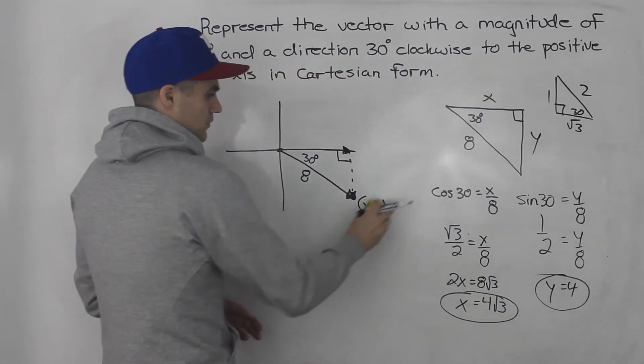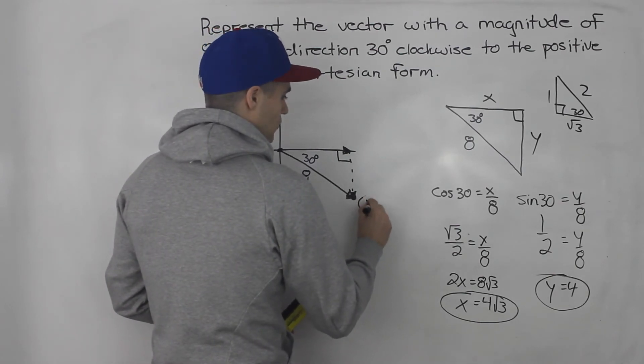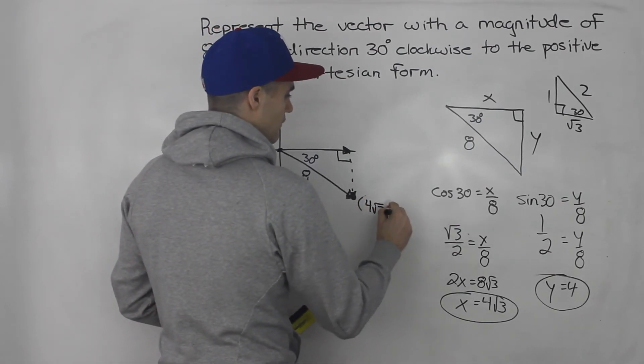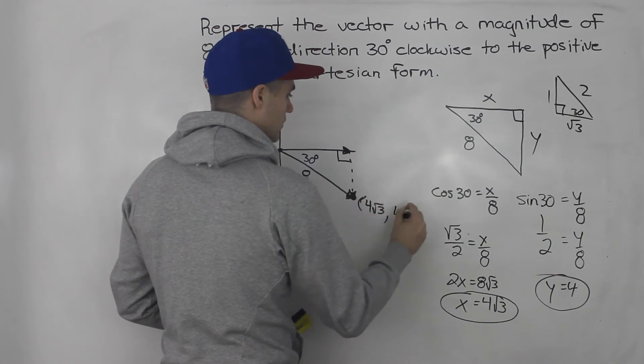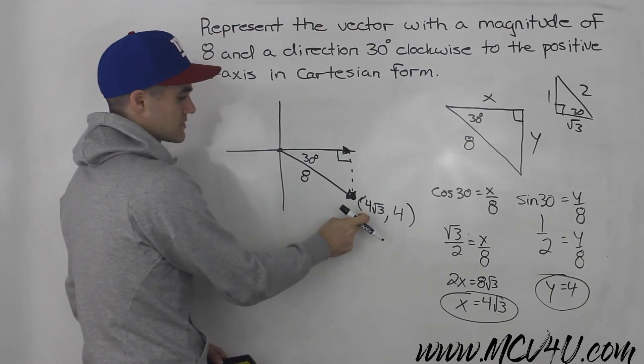Alright, so the x value is 4 root 3. And then the y value is 4. However, notice that we are in the fourth quadrant where all the x values are positive. We already have that as positive. But notice that all the y values are negative.